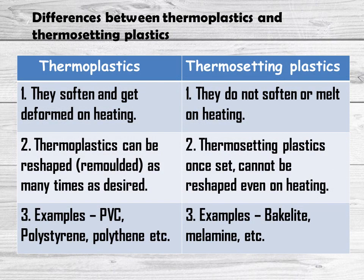Thermoplastics soften and get deformed on heating, whereas thermosetting plastics do not soften or melt on heating. Thermoplastics can be reshaped or remolded as many times as desired. On the other hand, thermosetting plastics, once set, cannot be reshaped even on heating. Thermoplastics have linear arrangement of monomers, whereas thermosetting plastics have cross-linked arrangement of monomers.